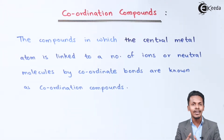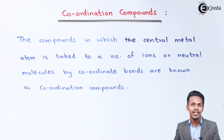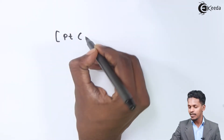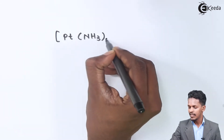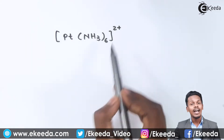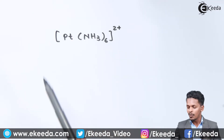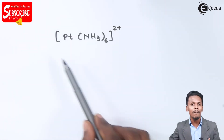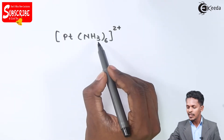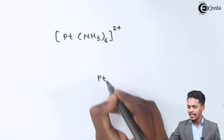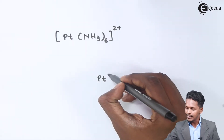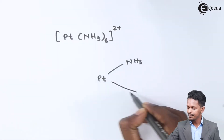Let me give you an example to understand coordination compounds in an easy manner. For example, this is platinum that has been surrounded by six amine groups. Coordination compounds are written with the help of brackets, because this represents a complex, which is also known as a coordination compound. The platinum is the central metal atom surrounded by six amine groups.